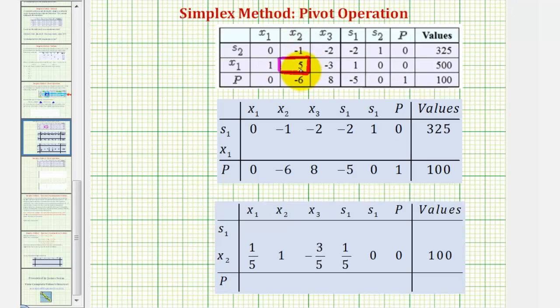So again, here's our pivot. To make the pivot equal to one, we'll replace row two with one-fifth times row two. We'll keep row one and row three the same for right now. So one-fifth times one is one-fifth. One-fifth times five is one. One-fifth times negative three, negative three-fifths. One-fifth times one. One-fifth times zero is zero. And one-fifth times 500 is 100.